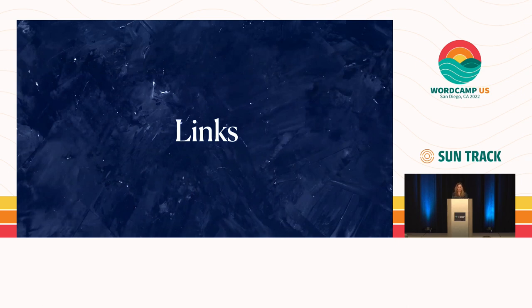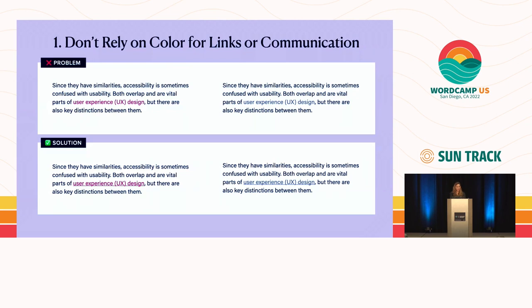Let's talk about links. Links are an important function of the web and very imperative for navigation. I have six rules of thumb. The first: don't rely on color only for links or communication. Using color only can get lost in grayscale. A link that looks well-defined for people who see color can be very difficult to define in grayscale — it would be easy for someone colorblind to not even know that link is there. If you're going to use color, always pair it with an indicator such as an underline.